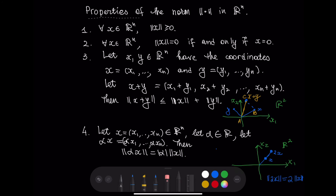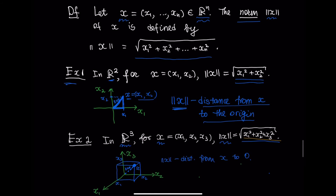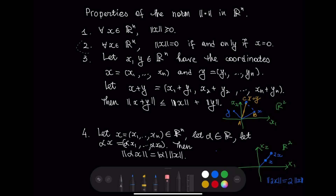Let us consider some properties of the norm in Rn. The first property is that for every x in Rn, the norm of x is always greater than or equal to zero, which is obvious from the definition since the square root of a sum of squares is always non-negative. The second property is that the norm of a point is equal to zero if and only if the point is at the origin. This follows from our understanding that the norm is the distance from x to zero, so the only way for that distance to be zero is when x is at zero.